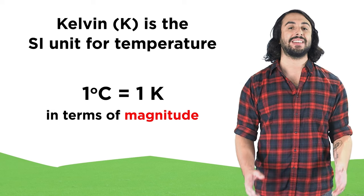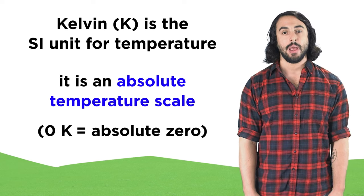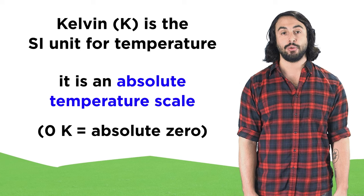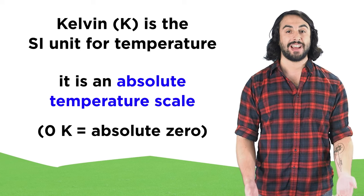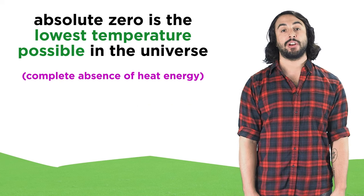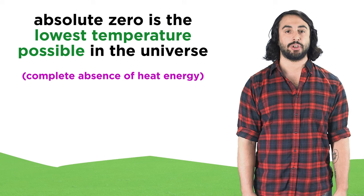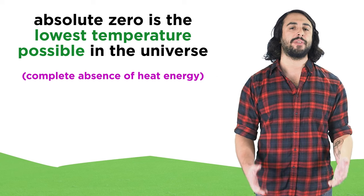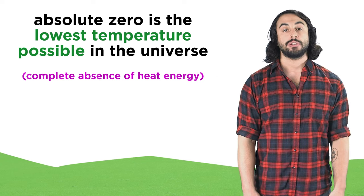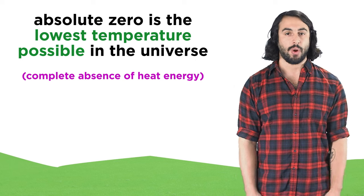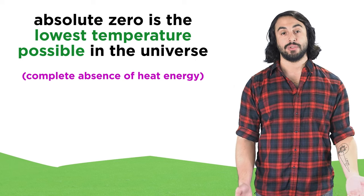But Kelvin is an absolute temperature scale, meaning zero Kelvin is absolute zero, or the lowest temperature possible. Believe it or not, there is a lowest possible temperature, because temperature is a measure of available heat energy. So if there is no heat energy whatsoever, you are left with absolute zero.